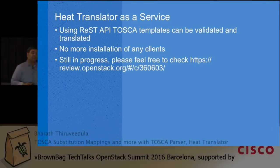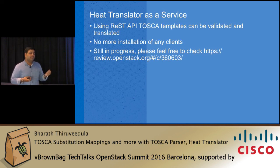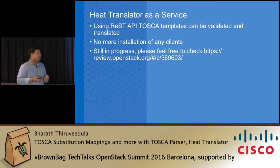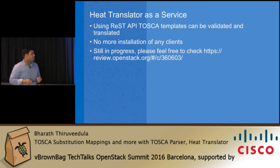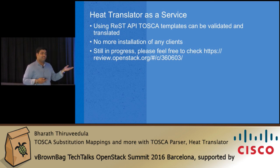An upcoming feature for Heat Translator is converting the Heat Translator client into a service. Instead of requiring a Python client installation and a Python application to use Heat Translator, we are creating Heat Translator as a server. You can use a REST API to convert TOSCA templates into Heat templates or to validate TOSCA templates — no Python client required. This is still in progress and needs reviews, so please check out the code and review it.